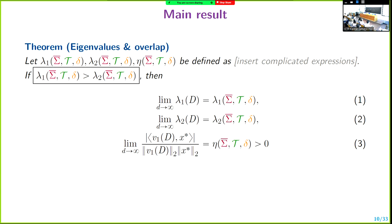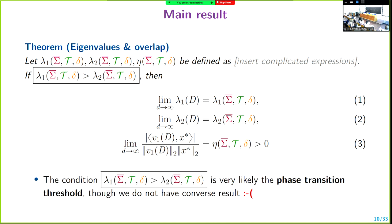The main result is the following. For any fixed given preprocessing function T, I'm going to define three numbers: lambda_1, lambda_2, and eta. If the condition lambda_1 is larger than lambda_2 holds, then: one, the top eigenvalue of D converges to lambda_1; two, the second eigenvalue of D converges to lambda_2; three, the overlap between the first eigenvector and the signal converges to eta. Note that these three numbers only depend on sigma-bar, T, and delta — they are dimension-independent. You don't have to know the data A or Y to compute these predictions.